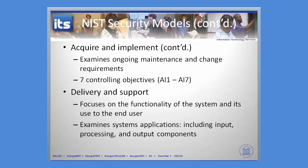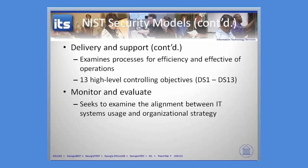This brings us to Delivery and Support. This focuses on the functionality of the system and the end user. You're going to look at the input, processing, and output components of any particular system, and then look at those processes to see if they are efficient and effective. There are 13 control objectives in Delivery and Support — almost as much as the entire Plan and Organize and Acquire and Implement combined.